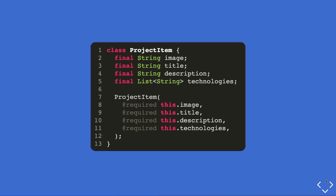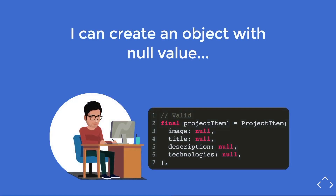You add the @required meta tag to all parameters in your ProjectItem class. Cross fingers — you send it to your senior developer, and he points out that you can technically create an object with null values. Indeed, passing null values to a ProjectItem is valid, and he has a point — any null value inside ProjectItem could cause errors.